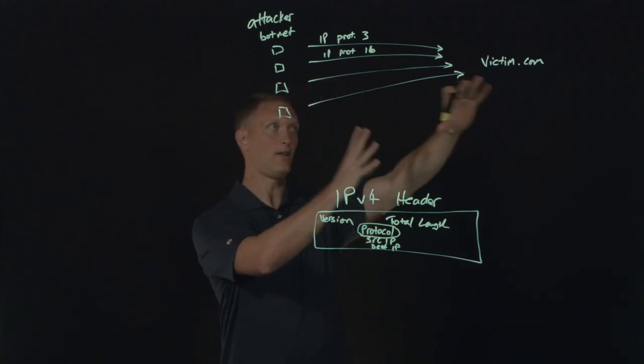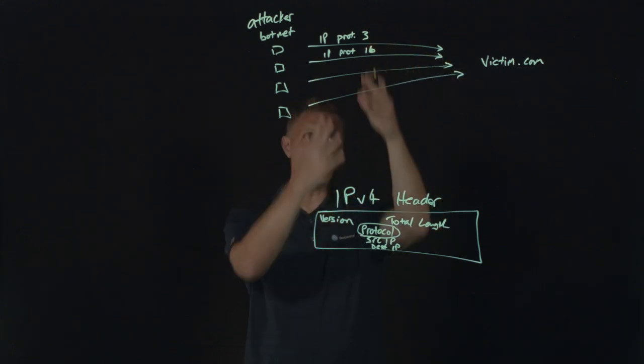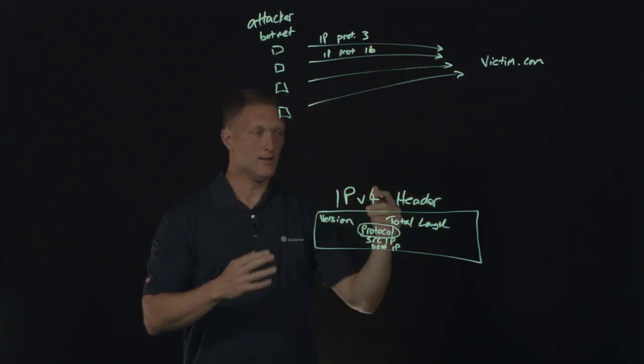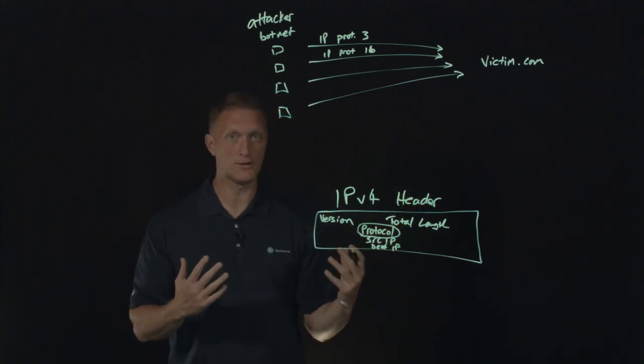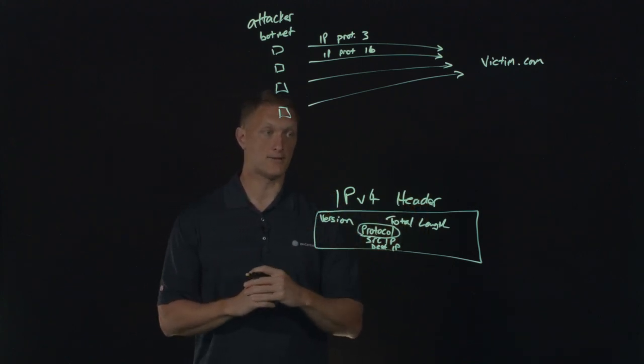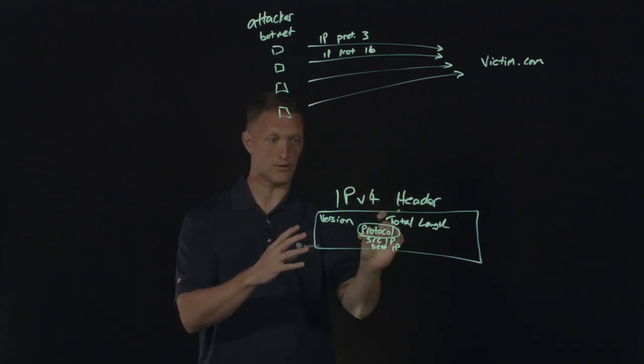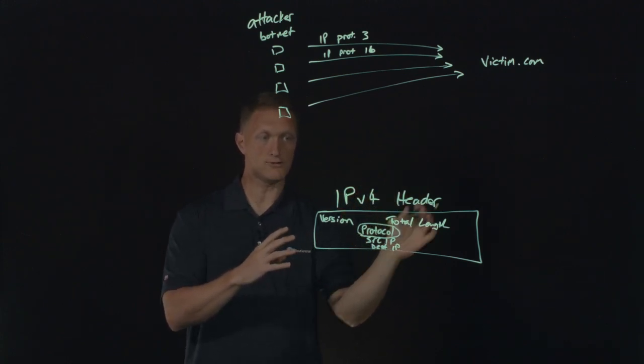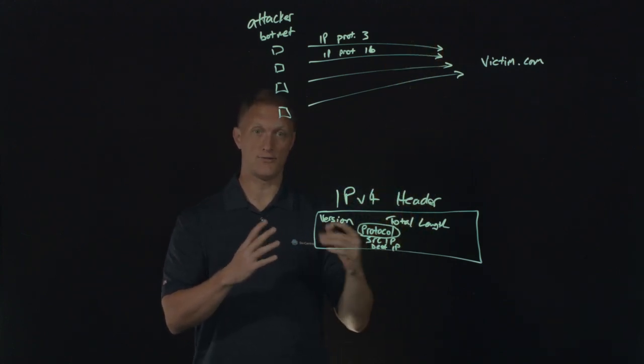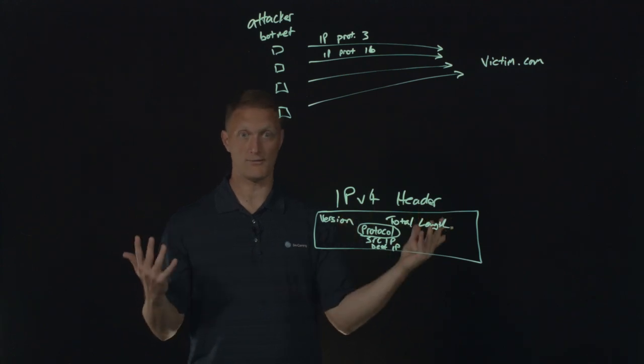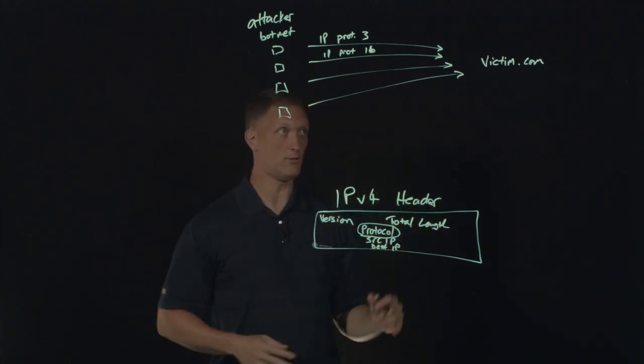And that's never the intent of the attacker. The attacker just wants to flood the victim so that when the victim gets all of these different packets with all these different protocols defined in these IP headers, the victim is going to not quite know what to do with them. Because if you have not explicitly filtered out the protocol type or the protocol definition of the IP header from your web application, then you're going to accept any and all of these.